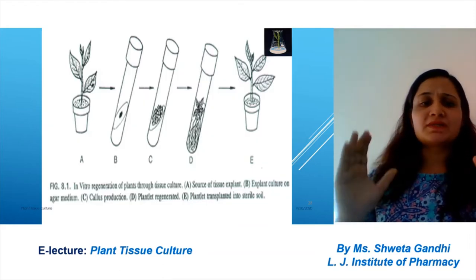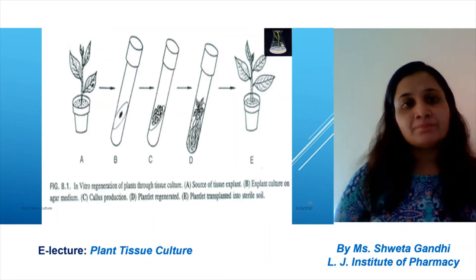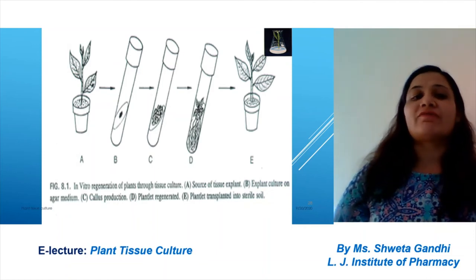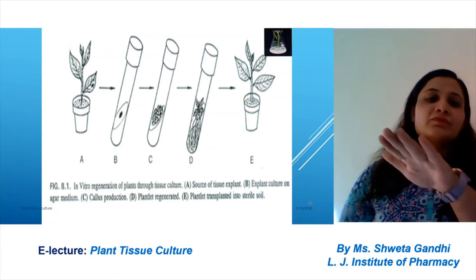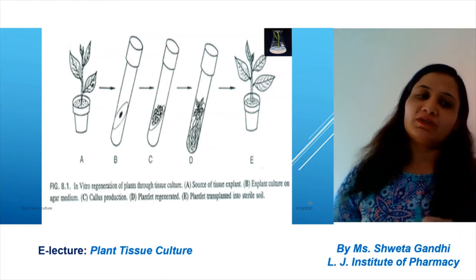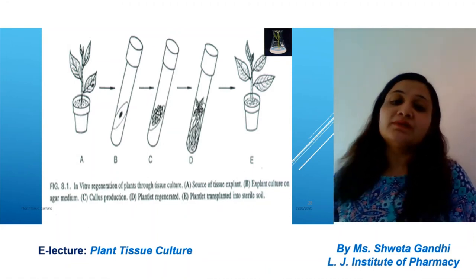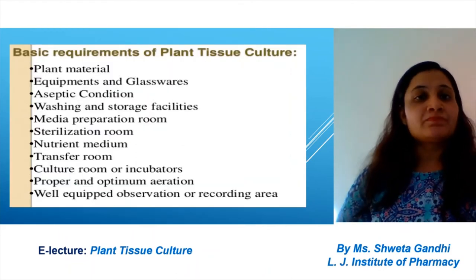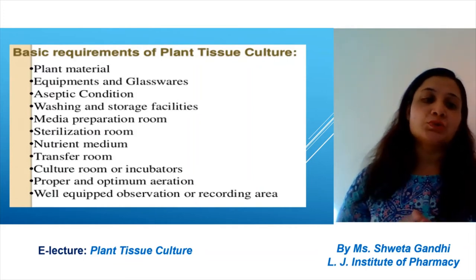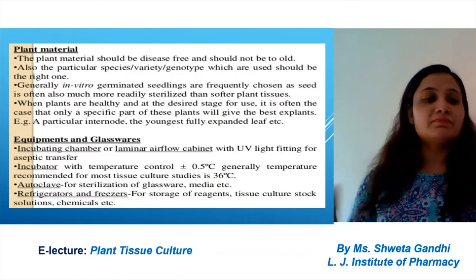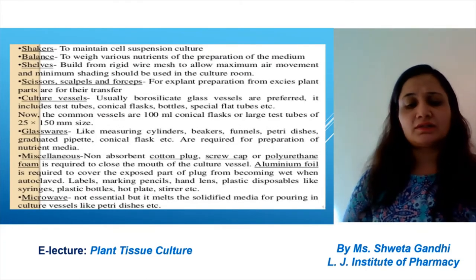This short presentation shows how plant tissue culture can be done in vitro. We take the tissue explant from source A, make a culture, and inoculate the explant in the medium — explant culture on agar medium. Jelly or gummy mediums are used so the culture medium can hold its shape. After some time the explant develops callus, then plantlet regeneration occurs, and these plantlets are transplanted into sterile soil. Basic requirements include plant material, equipment, glassware, media preparation, sterilization, nutrient medium, culture room, optimum aeration, and laminar airflow.